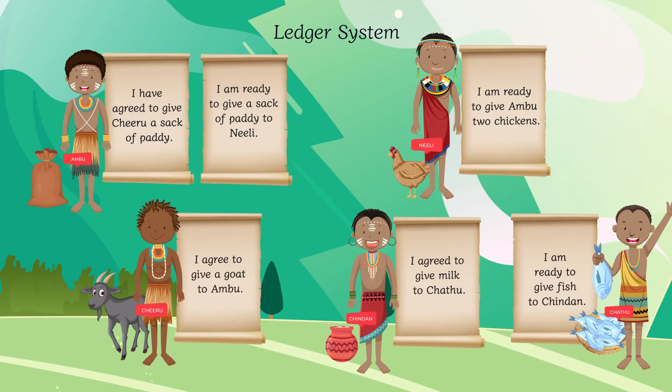After the barter system, the ledger system emerged. A ledger system is a way of keeping track of transactions between individuals and organizations.